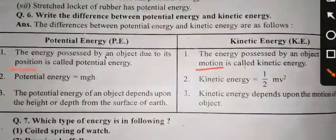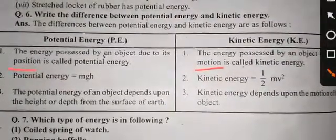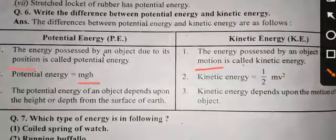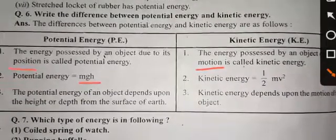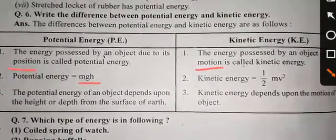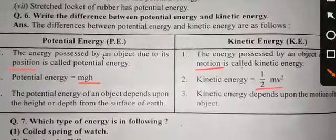Second point: potential energy's formula is mgh, where m is the mass of the object, g is gravity, and h is the height. Kinetic energy's formula is half mv squared.